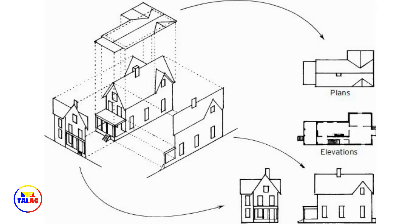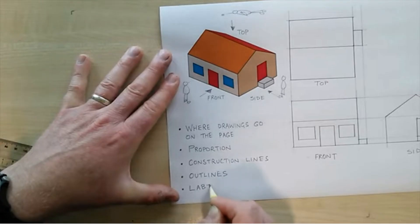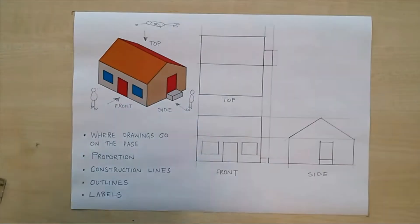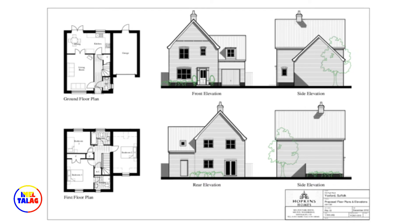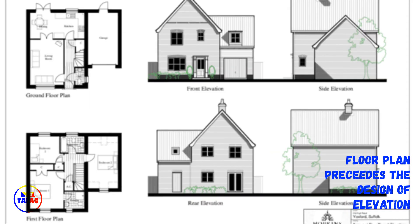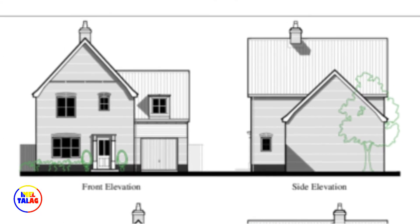Elevation drawings are orthographic drawings. They show the exterior of a building. Elevations are part of the building that people see and observe, hence it is the part they use to judge the structure. Normally, the design of the floor plan precedes the design of the elevation, because both have a continual relationship in the entire design process.